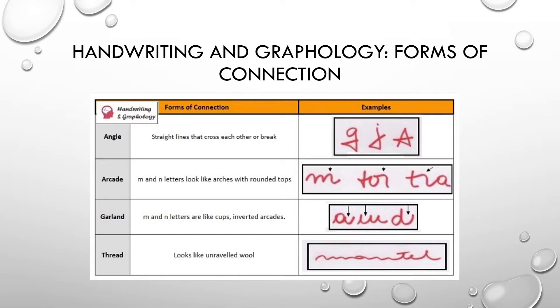Look at your M's and N's. If the M's and N's look like arches with rounded tops, I want you to write down arcade. If your M's and N's look more like cups with inverted arcades, I want you to write down garland.